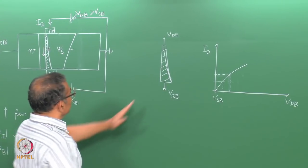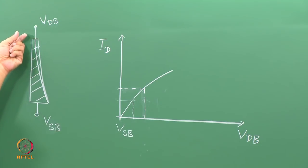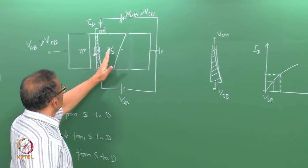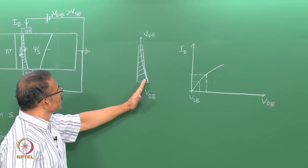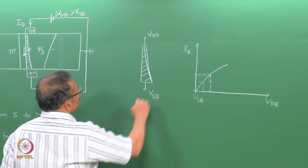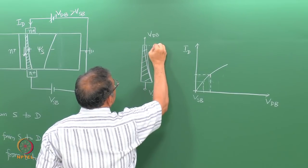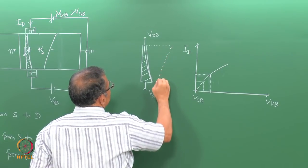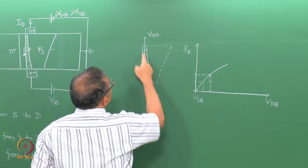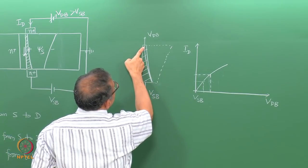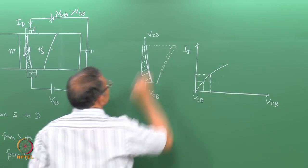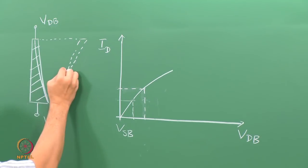This explains the shape: because the inversion charge goes on reducing from source to drain, and the reduction at the drain is more and more as VDB increases, you get this tapered shape. The depletion charge does not affect current flow because current flows only through the inversion charge. For some high value of VDB, the inversion charge near the drain becomes very small. In advanced theory, the inversion charge never goes to zero at the drain end — it saturates at a value where the electron velocity equals the saturation velocity.